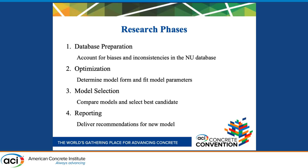Here's an outline of what our research involves. There are four phases: database preparation of the Northwestern University Creep and Shrinkage database, optimization on the models, selecting the best model candidate, and reporting the recommendation of the new model to ACI 209. Right now we are currently starting phase four for shrinkage and starting phase two for creep. I will dive into what we have done with shrinkage so far.